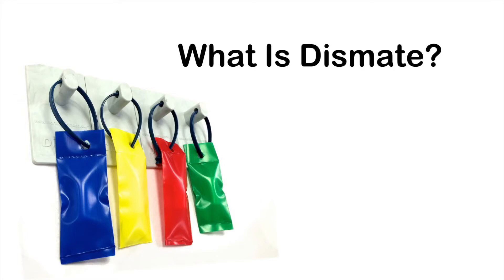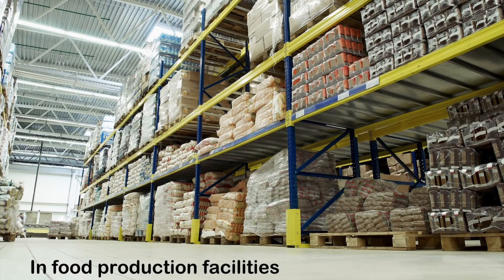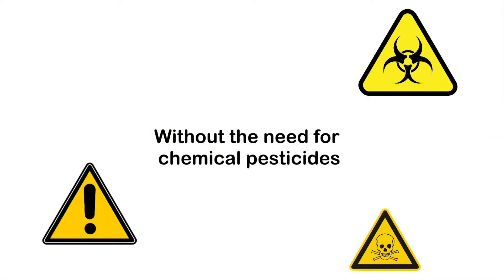What is Dismate? Dismate is a non-toxic, pheromone-based mating disruption system. It is designed to control the Indian meal moth in food production facilities without the need for chemical pesticides.